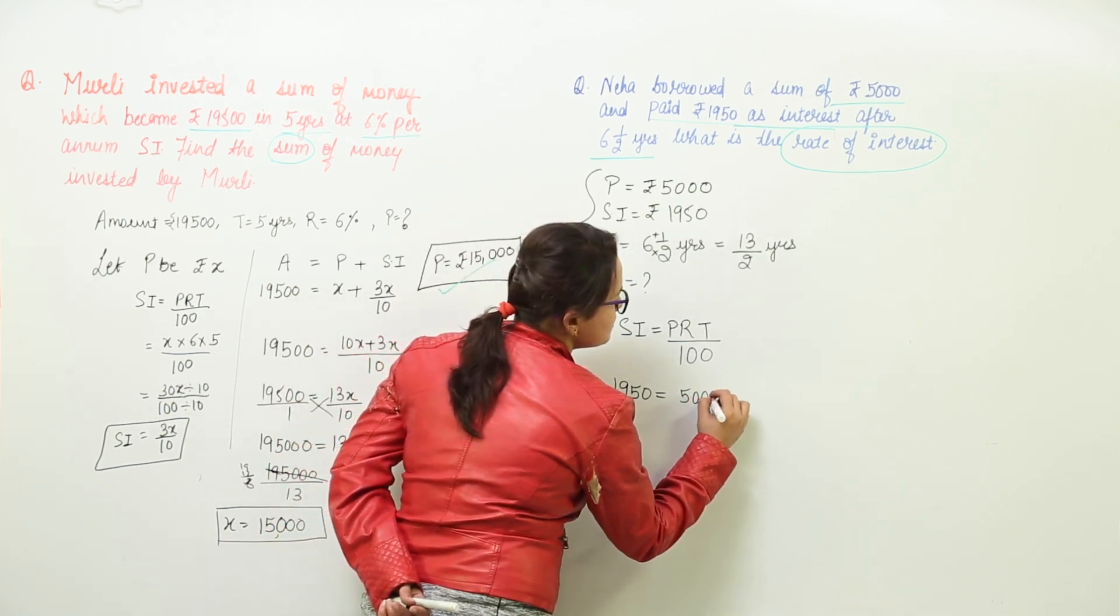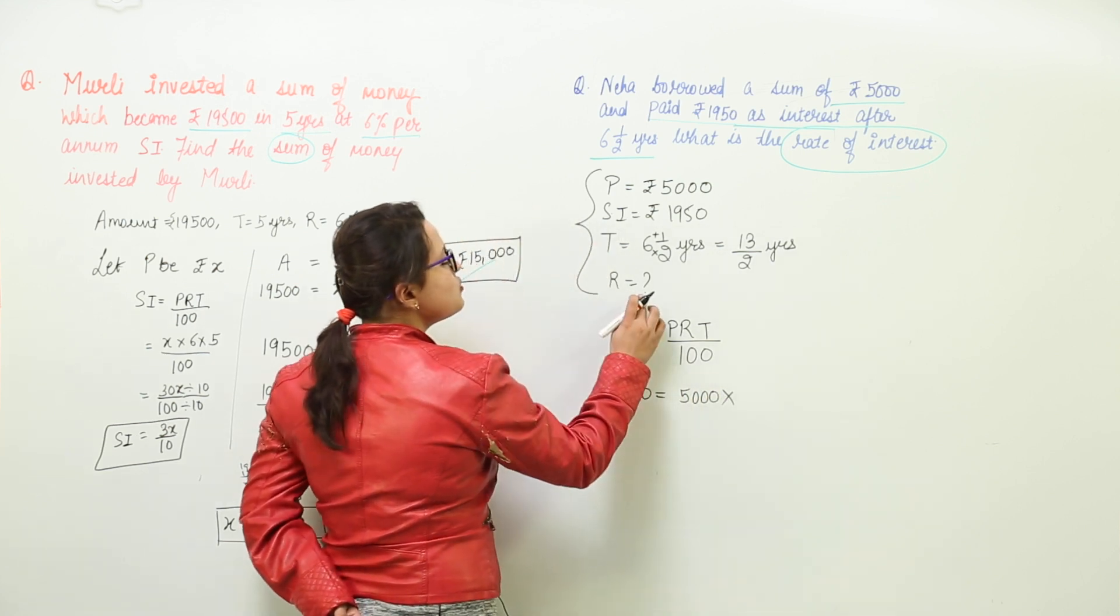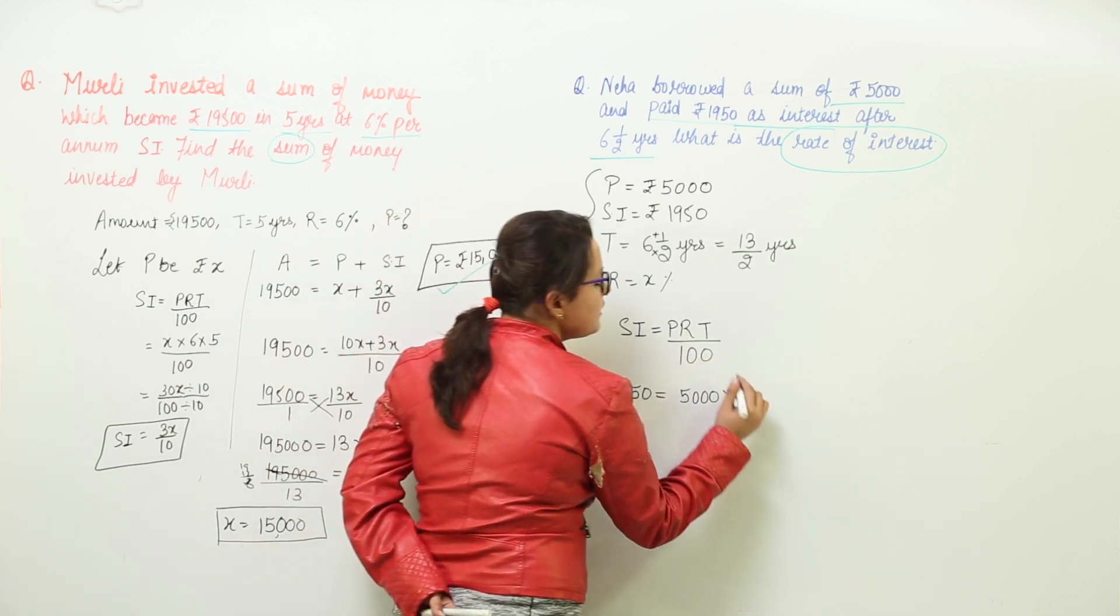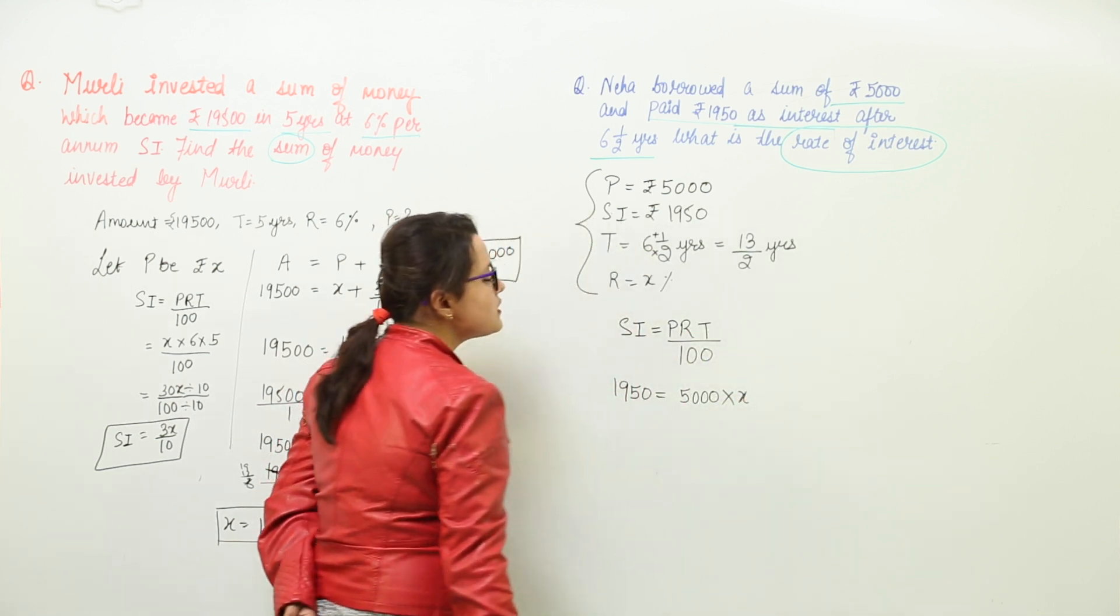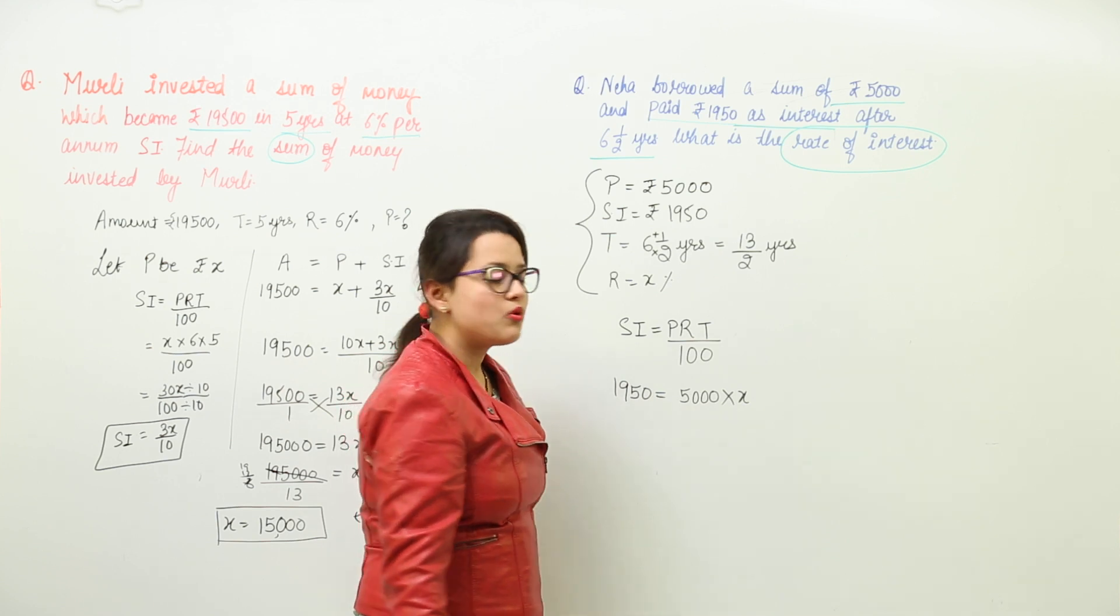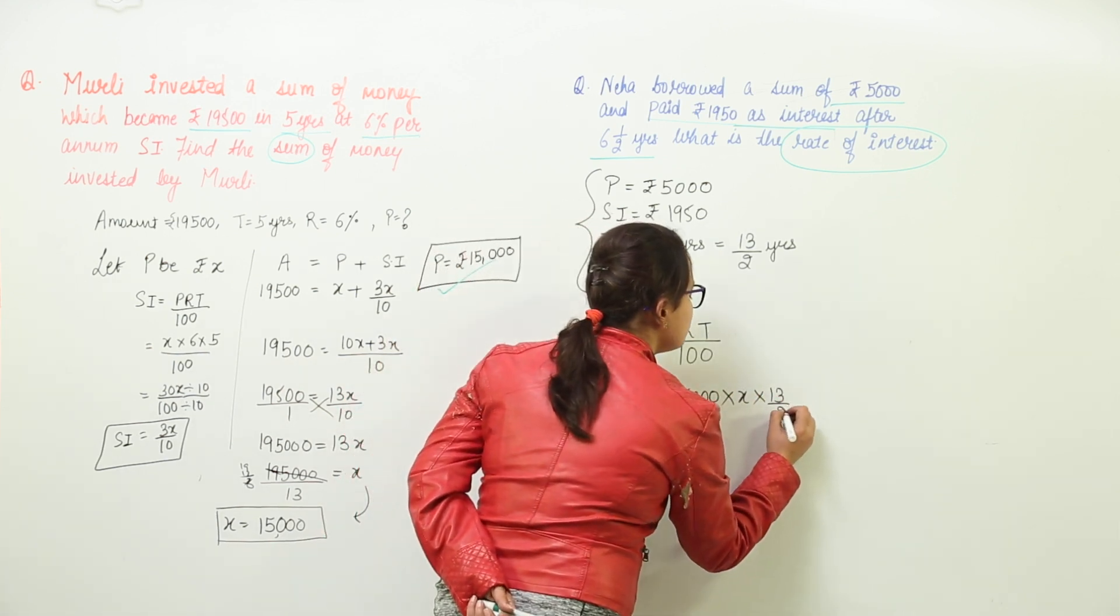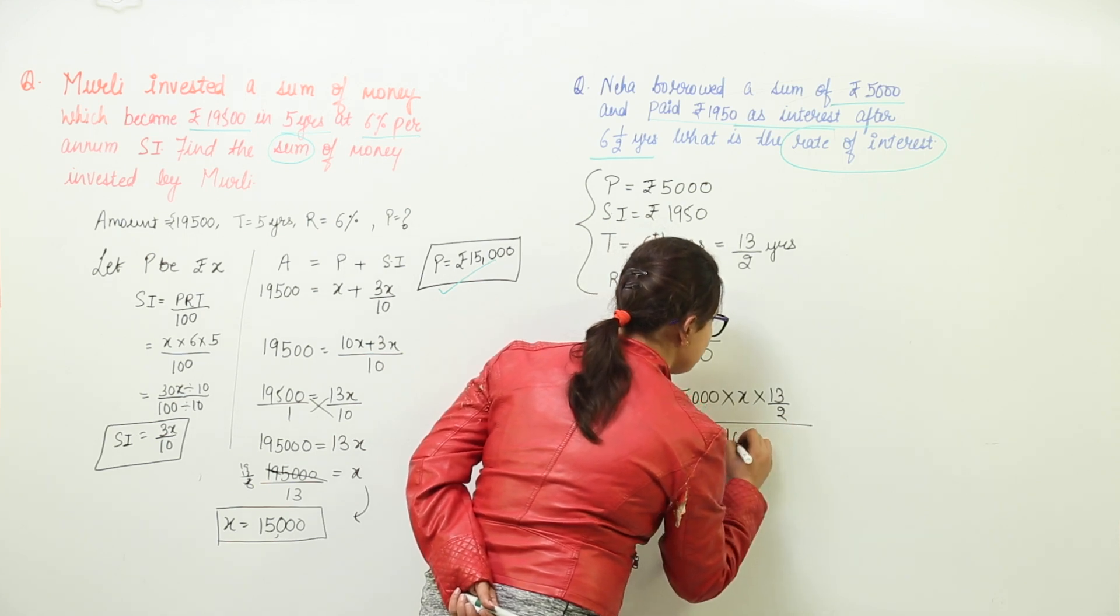5000 is the principle. Let us assume the value of R to be X percent per annum. So I will write in the place of R as X. What is my time period? The time period is 13 upon 2 and whole divided with 100.